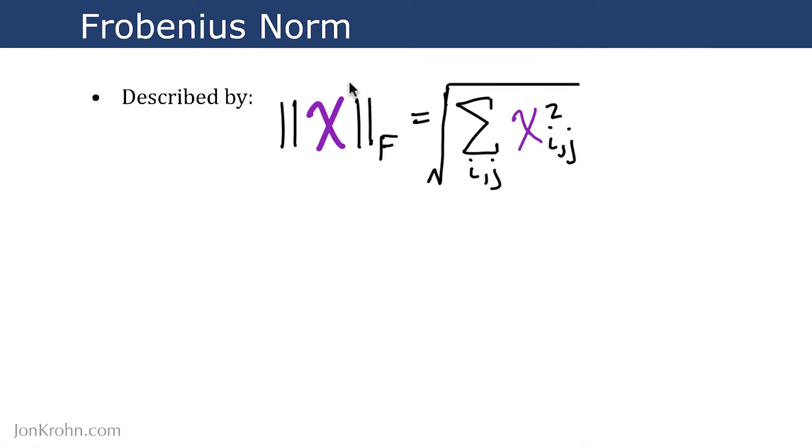We annotate the Frobenius Norm using the same kind of norm notation as we used in earlier videos where we were talking about vector norms. You can check that out if you haven't already, the norms and unit vectors topic that occurred earlier in this subject. So there we had a vector, which is lowercase in bold. Here we have a matrix, which is uppercase in bold.